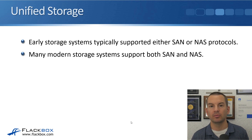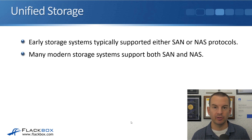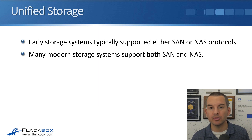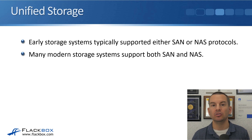Back in the day, storage systems were typically either NAS or SAN, supporting all or some of those respective protocols. What you find nowadays is a lot of storage systems offer unified storage, meaning they offer both SAN and NAS. If you're using a storage system at work, you'll choose the most suitable protocol for the particular workload or application — for example, iSCSI SAN for SQL databases, NFS for your VMware datastore, and SMB for your users' home folders.